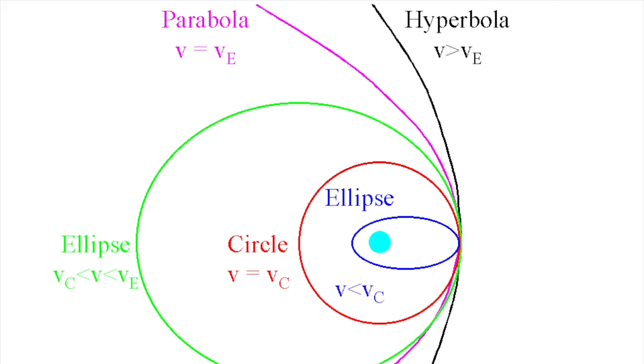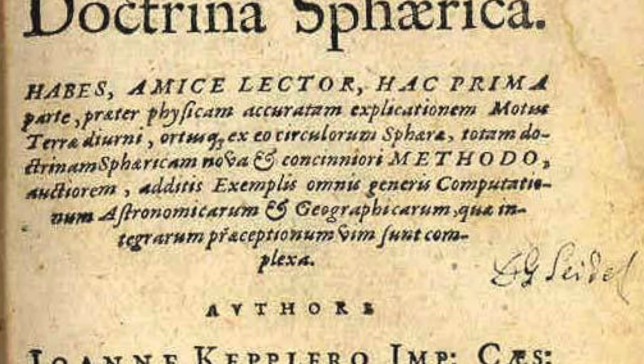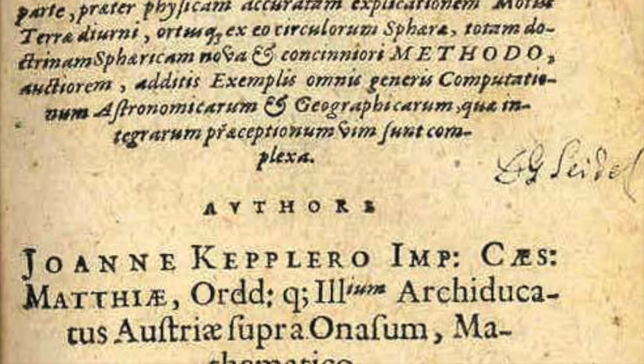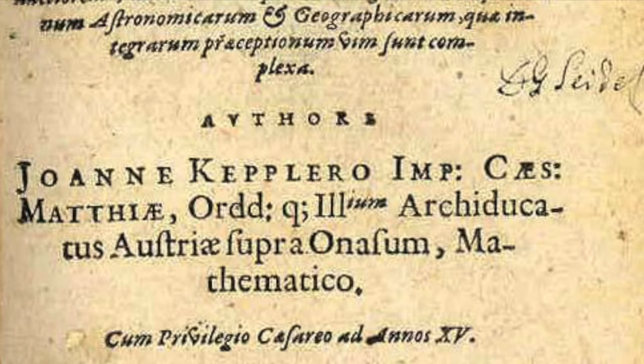The laws of Kepler are the basis of all the orbits in space and are one of the foundation stones of astronomy. He then went on to produce another paper in astronomy in 1621, which would be his most influential work, discussing all heliocentric astronomy in a systematic way.